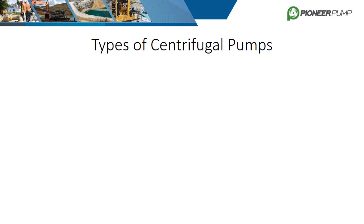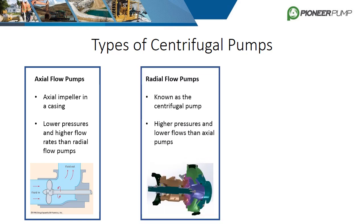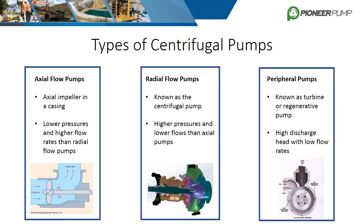Now that the basic hydraulics have been covered, let's discuss the three main types of centrifugal pumps. The first type is the axial flow pump, used in high flow and low head applications — including flows up to 300,000 gallons per minute and heads up to around 30 feet. Radial flow pumps refer to the modern centrifugal pump; they are designed to produce higher pressures or head and lower flows than axial pumps. The last type is a peripheral pump, also known as turbine or regenerative pumps, used where high pressure is needed and flow requirements are relatively low. Unlike radial flow pumps, peripheral pumps can transport fluids with high gas content, but they lose to radial pumps in efficiency.